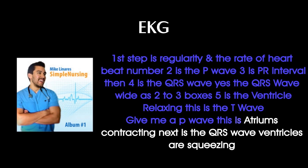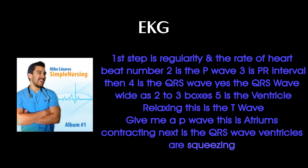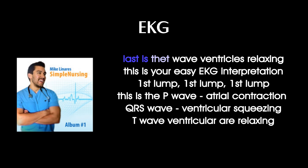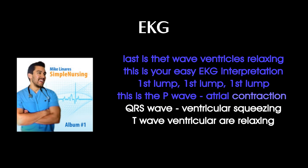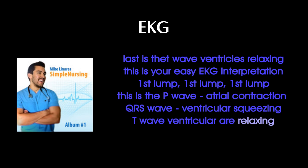Give me a P wave — this is atriums contracting. Next is the QRS, the ventricles are squeezing. Last is the T wave, the ventricles relaxing. This is your easy EKG interpretation. First lump is the P wave, ventricular contraction is the QRS wave — ventricular squeezing. Then the T wave, ventricles relaxing.